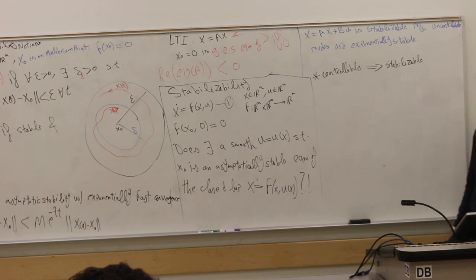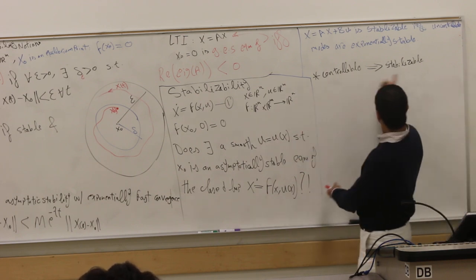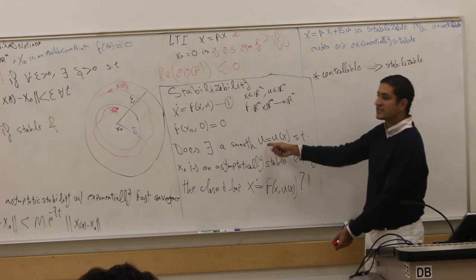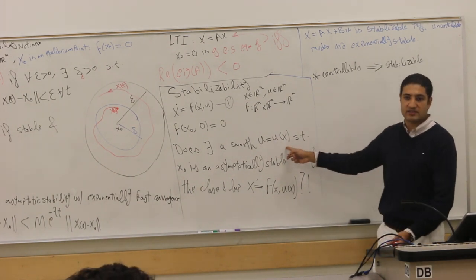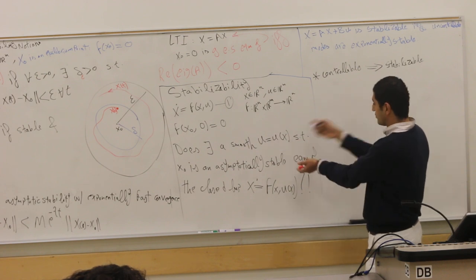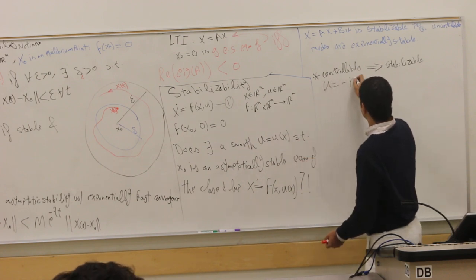Because if your poles are on the right-hand side, you can control it. So, stabilizable means that there exists u equals blah blah blah, right? That stabilizes your system. Well, okay, here is if you want to control, here is your control. Negative Kx. There were some things down here.